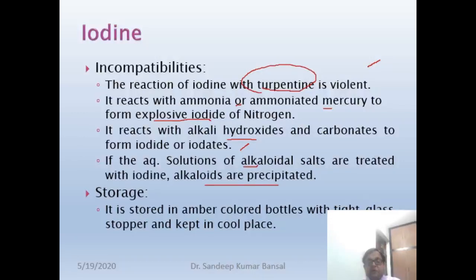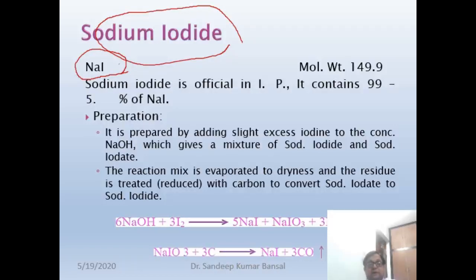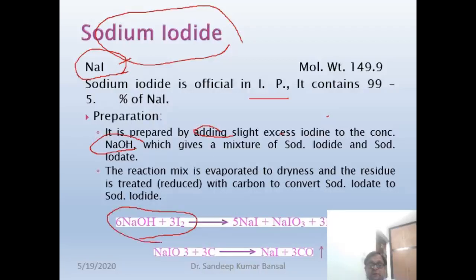Iodine should be stored in amber-coloured bottles with a tight glass stopper and kept in a cool place. The next compound to be discussed is sodium iodide. The formula of sodium iodide is NaI — Na for sodium and I for iodine. This compound is official in IP. It can be prepared by the addition of a slight excess of iodine to a concentrated solution of sodium hydroxide, which gives sodium iodide and sodium iodate. The remaining sodium iodate is further reduced with carbon to give a yield of sodium iodide.